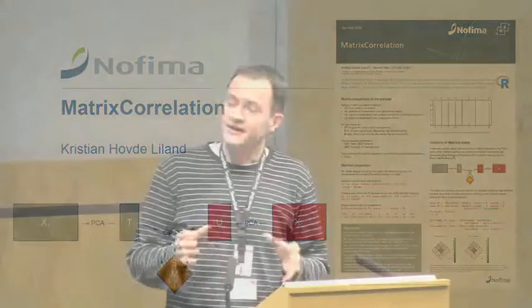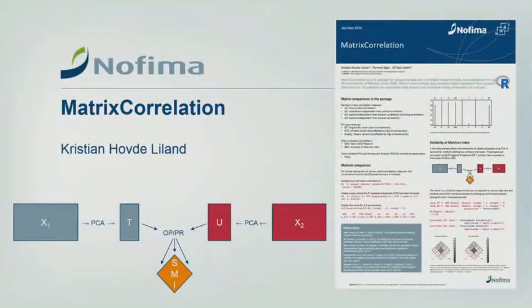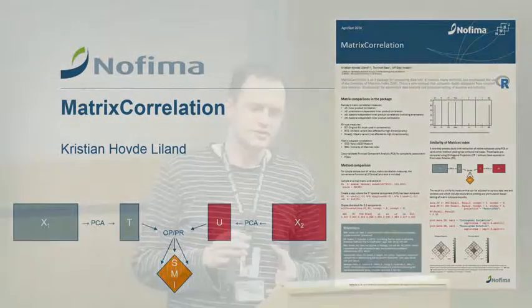It's a package that has a lot of different methods for comparing matrices, and the main method here is the SMI method, which we see in the bottom here. It's in a publication that is just submitted as we speak, and it is comparable to the RV coefficients and the family of RV coefficients, but it will give you a more explorative view into the substructures of your data. So, please visit it.